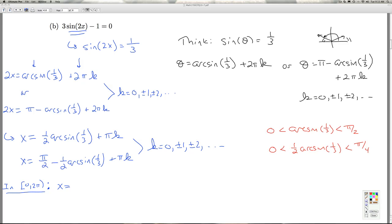When I plug in, of course, k equals 0, I get 1 half arc sine of 1 third, which is between 0 and pi over 4, so it's between 0 and 2 pi. Alright, what if I let k equal 1 and I add pi to that? If I add pi to that, then I've got pi plus something between 0 and pi over 4. That's going to give me something between pi and 5 pi over 4, and so that's also going to be between 0 and 2 pi. If you don't like thinking algebraically, folks, you can always think geometrically.